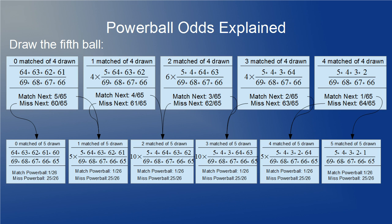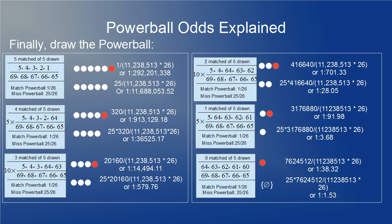Now, drawing the fifth ball, I have to decrease the size of the boxes still more, and then finally the Powerball. Lots of multiplication and division involved in these few steps. I've also converted the fractional odds at the end to have a 1 in the numerator, since we humans tend to interpret odds better when they're expressed as 1 in some larger number, like 1 in 100 million.